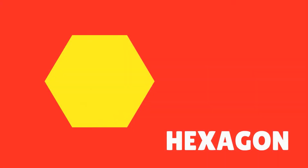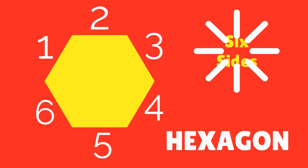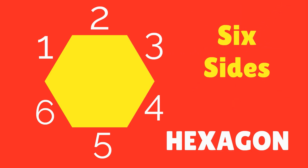How many sides does a hexagon have? Let's count: 1, 2, 3, 4, 5, 6. A hexagon has 6 sides.